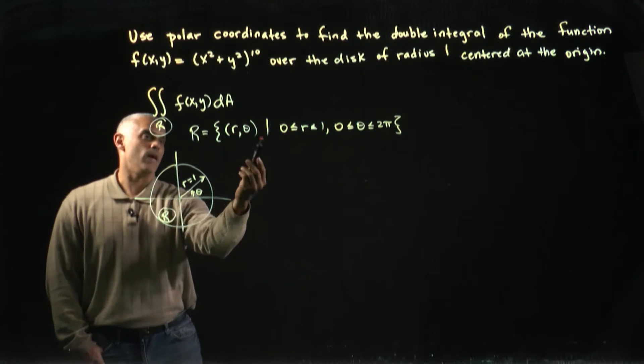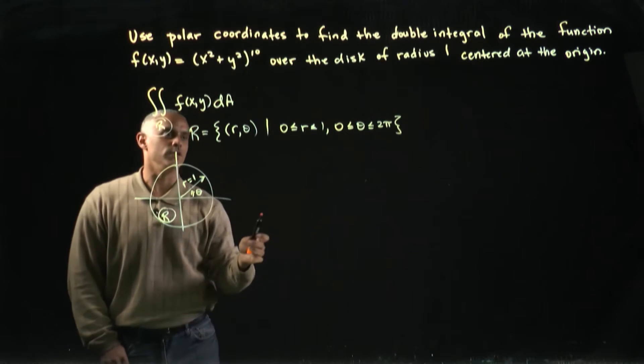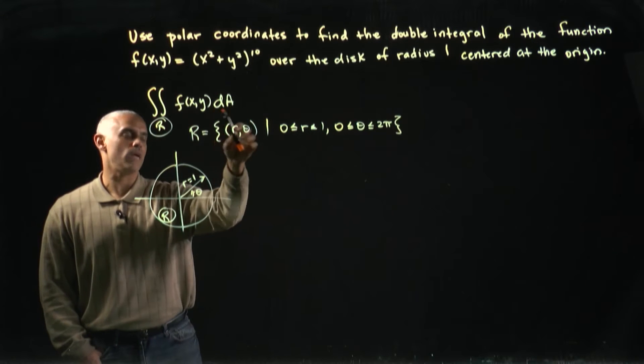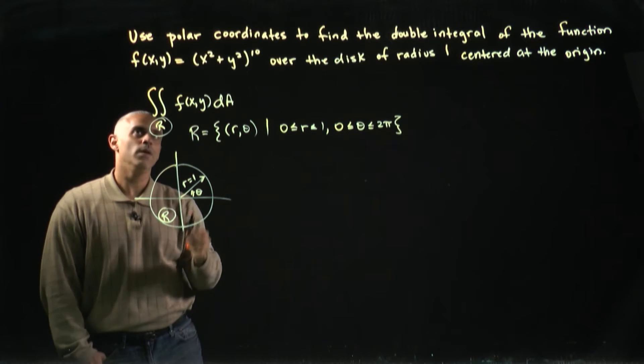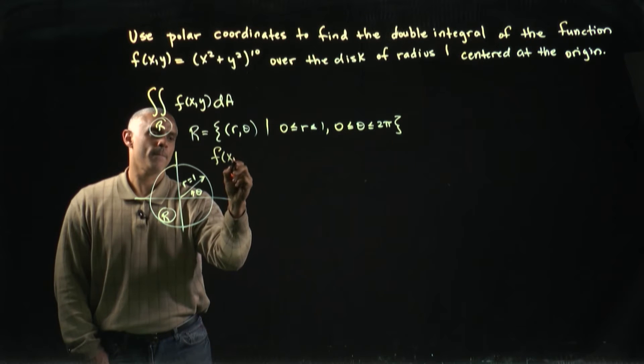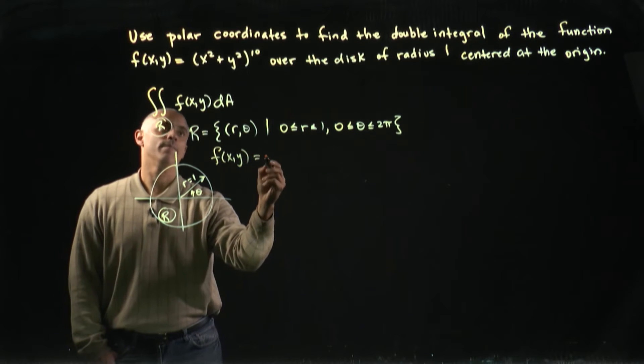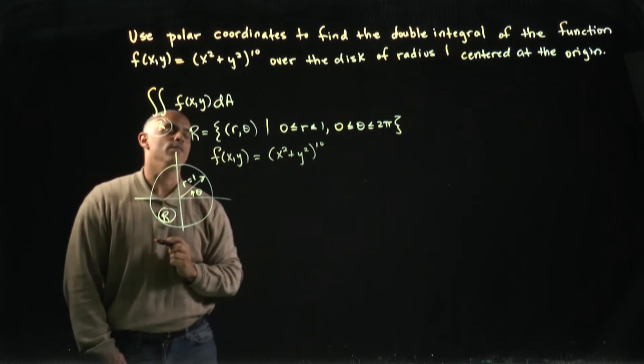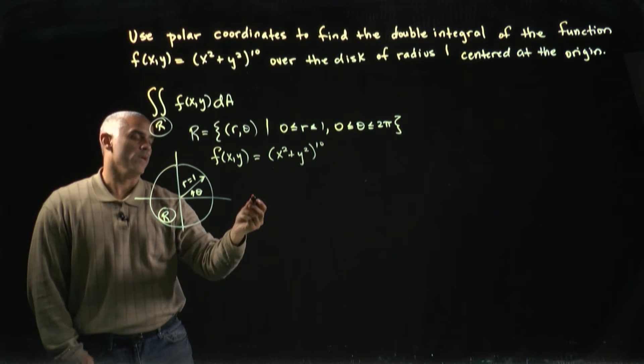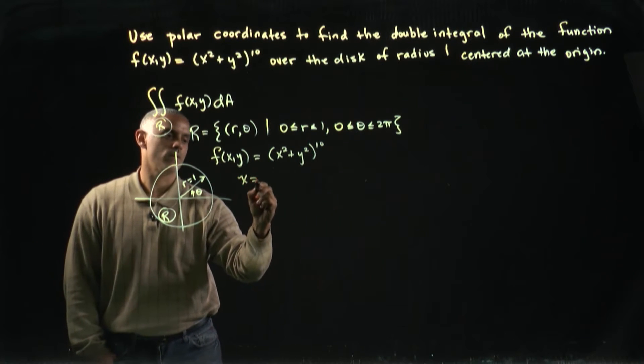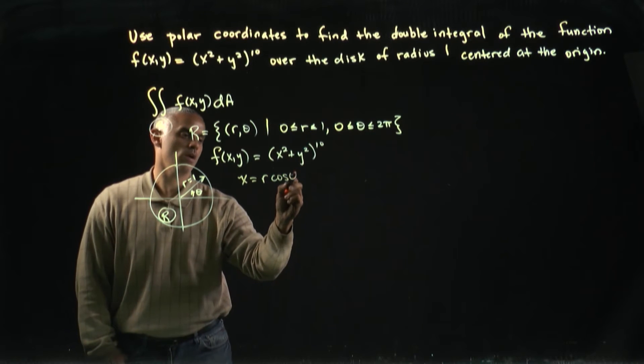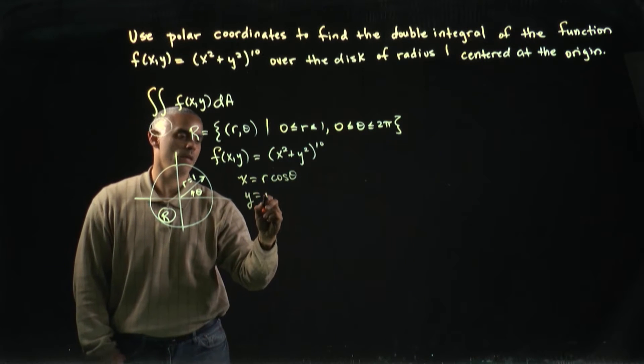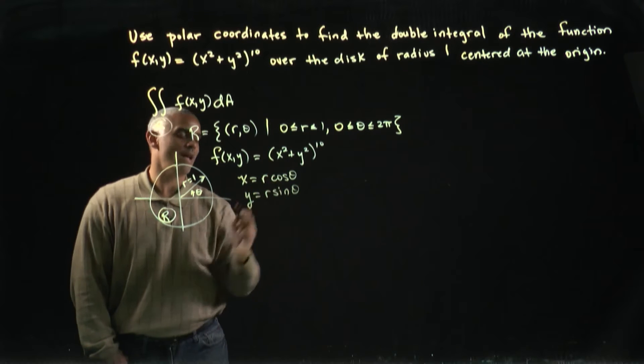I use this to set up my limits of integration, and that'll help tease out the differential area element. What about the function f(x,y)? I have that this is (x² + y²)^10. Now, if we recall, in polar coordinates x = r cos θ and y = r sin θ.